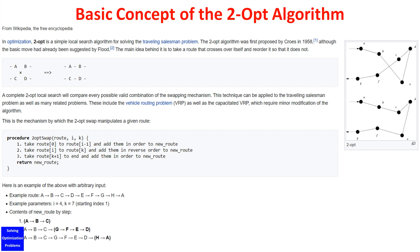These include the vehicle routing problem, or VRP, as well as the capacitated VRP, which require minor modification of the algorithm.